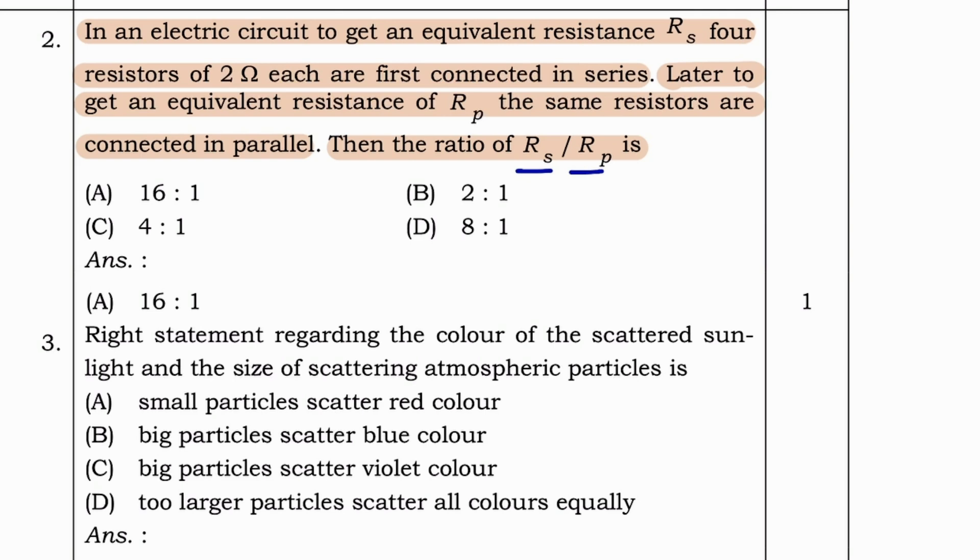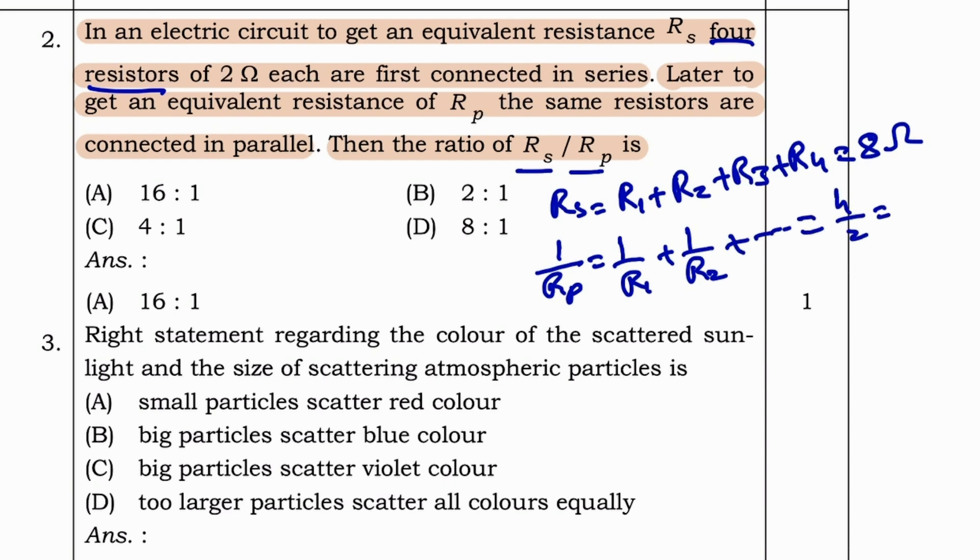To solve these questions, there are two methods. One is lengthier method. I will first show that one. In the lengthier method, first you need to find RS and RP. Here they have given total of 4 resistors. Then RS equals R1 plus R2 plus R3 plus R4, which will be a total of 4 into 2 is 8 ohm. And then RP, 1 by R1 plus 1 by R2 and so on. So at last it will be 4 by 2, which is 2, 2 ohm. And so then RP will be 0.5 ohm.